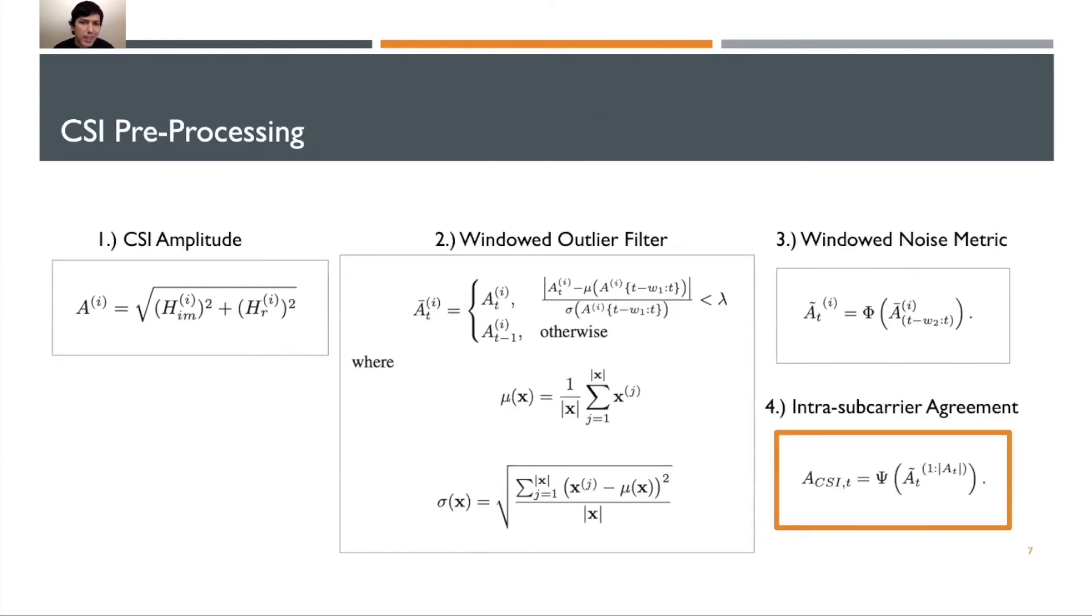As we collect CSI, we're collecting much more data than compared to RSSI. Our first step is to do some intelligent pre-processing of our CSI. Step one is to take that raw CSI vector that we collected and create CSI amplitude for each of those subcarriers.